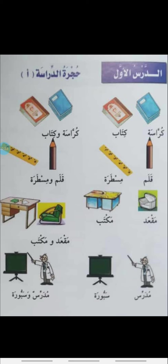Now fifth is maktabdun. Maktabdun ka meaning hai sofa. Sixth is maktabun — meem, kaaf, ta, ba, nun — maktabun. Maktabun ka meaning hai table. Maktabdun wa maktabun — sofa and table.